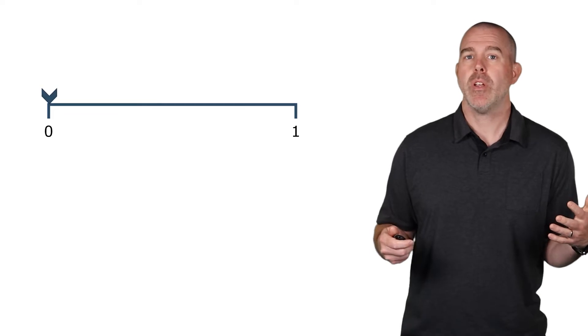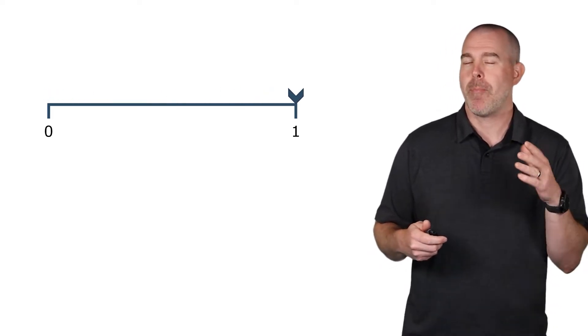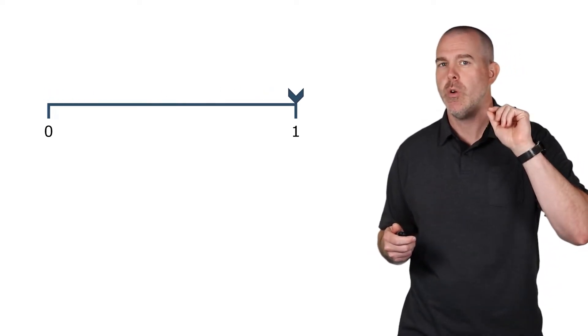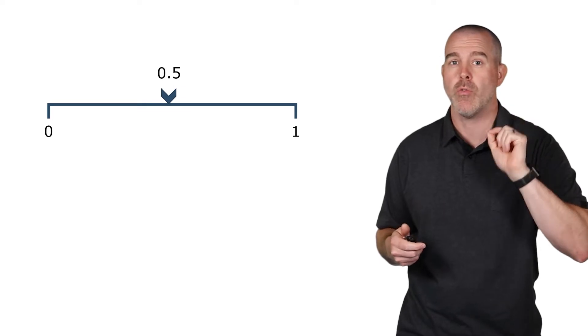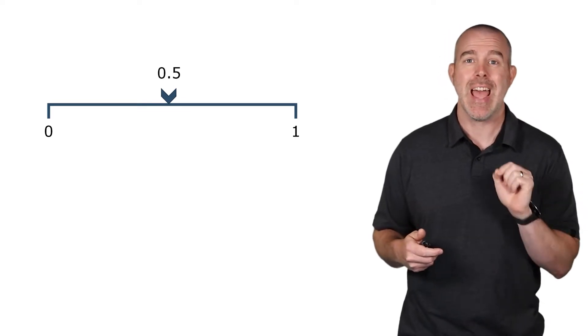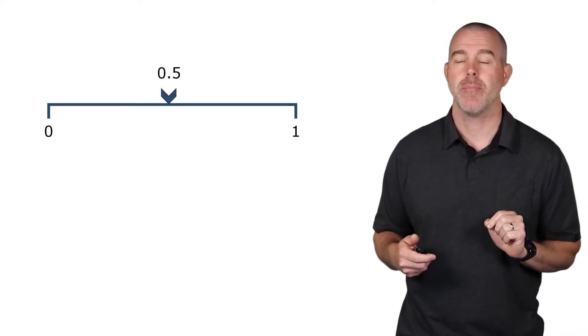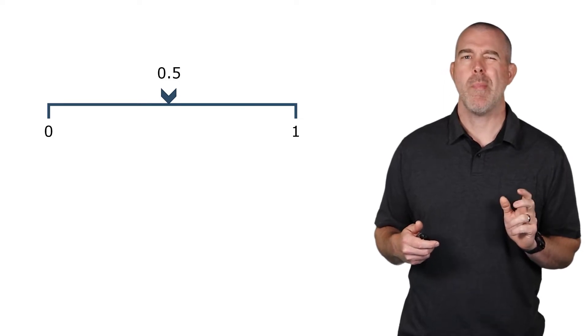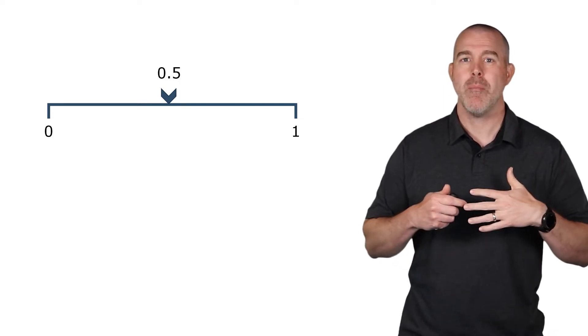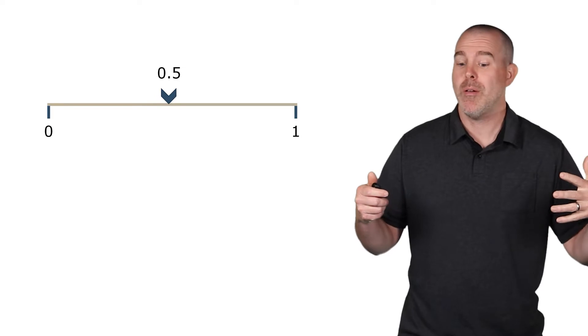All right, let's say we have a random variable. In fact, let's say we're looking at a random number generator, and we're generating a random number between 0 and 1, any number between 0 and 1. So our number could be anywhere in this interval. Let's look at some probabilities. What if we want to know the probability that our randomly generated number is exactly 0.5?